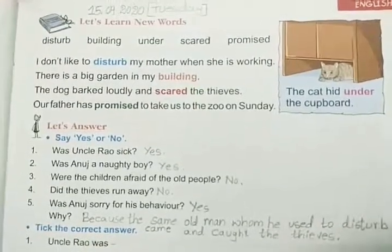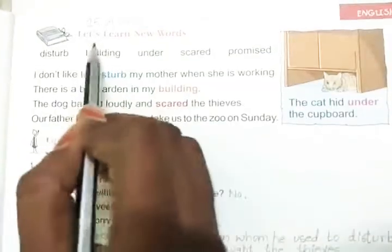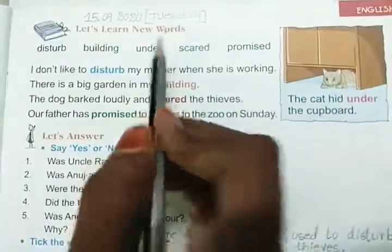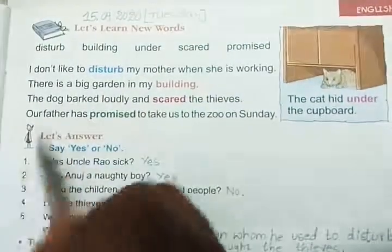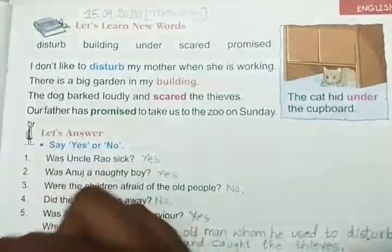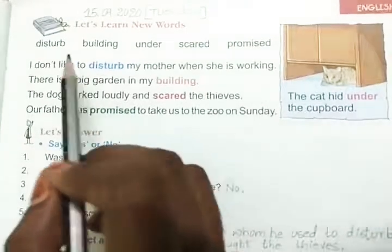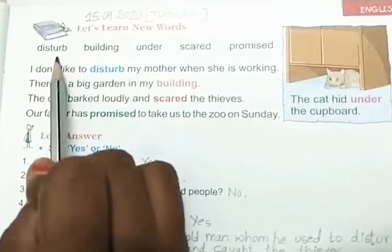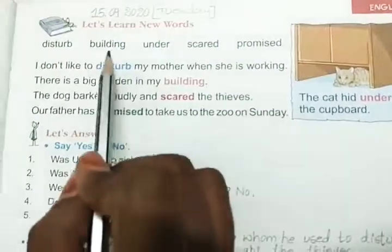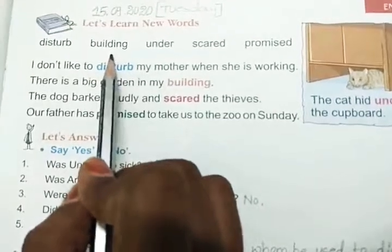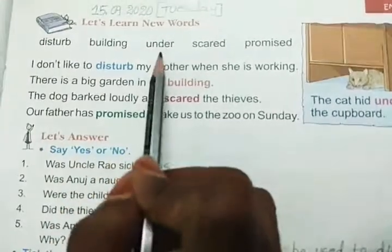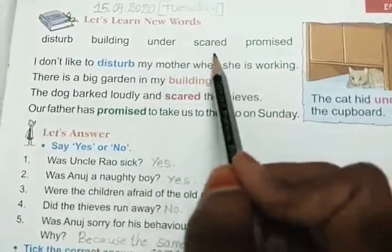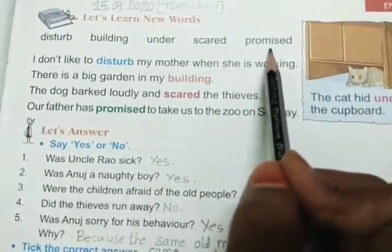Okay children, let's see. First, let's learn new words from this lesson. The new words are: disturb, building, under, scared, promised.